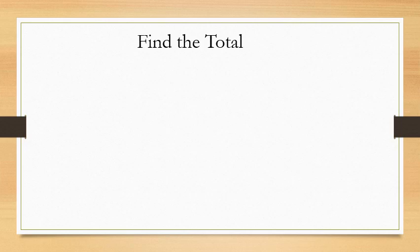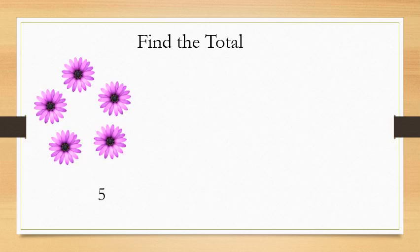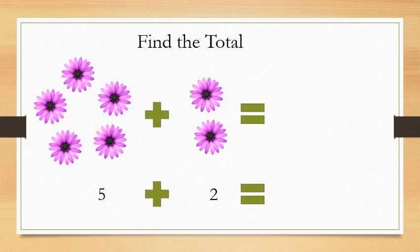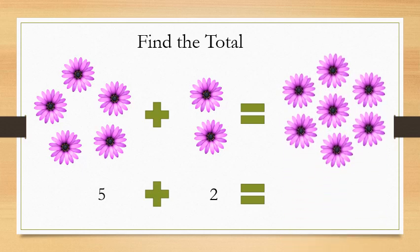Now, let's do one question. Find the total. Here, five flowers are given and two more flowers are given. How can you find the total? You can find the total by adding them. 5 plus 2 equals how much? 7. How did you get 7? By counting the number of flowers. So, how many flowers in all? 7 flowers.